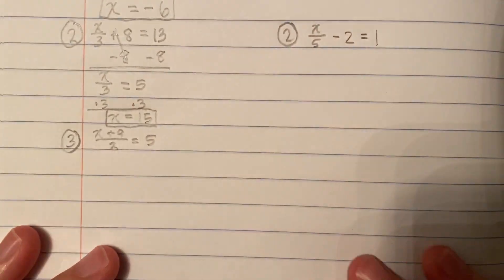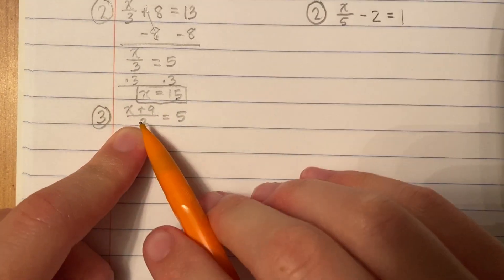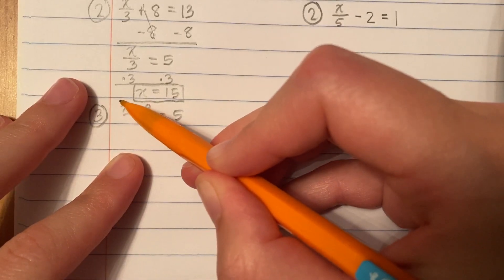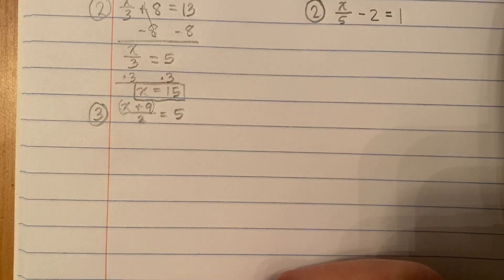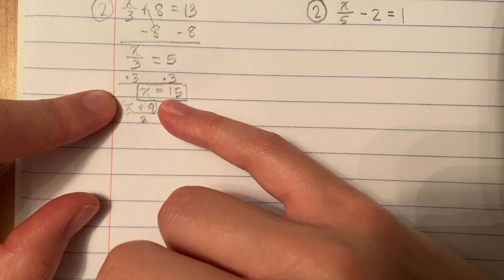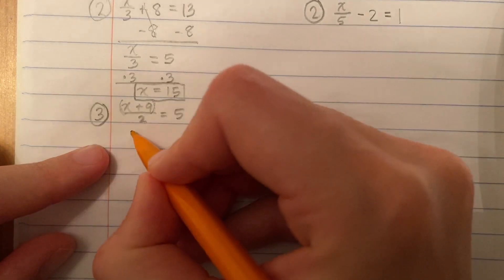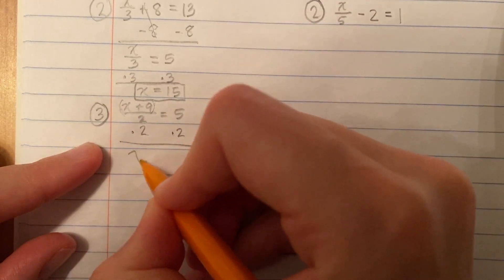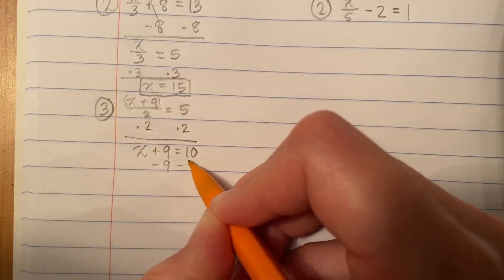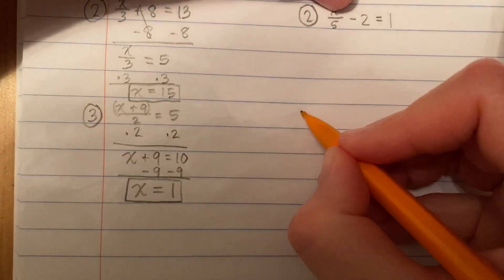Here's your third example — here's where people get confused. You might think to subtract 9 first, but remember it's reverse order of operations. This fraction bar is a grouping symbol — it's basically in parentheses. In order of operations, parentheses come first, which means in reverse order they come last when solving equations. So instead of dealing with X plus 9 first, we deal with the divided by 2 first. I multiply by 2, getting X plus 9 equals 10. Then I subtract 9 from both sides, so X equals 1, using inverse operations.